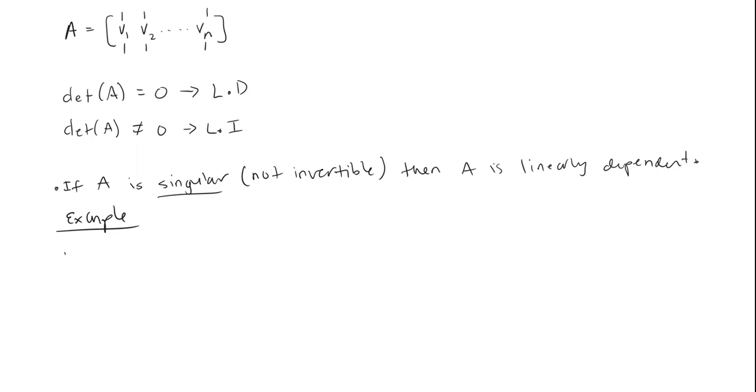We have V1 equal to this vector, V2 is equal to this one, V3 is equal to this one, negative 7 and 3.